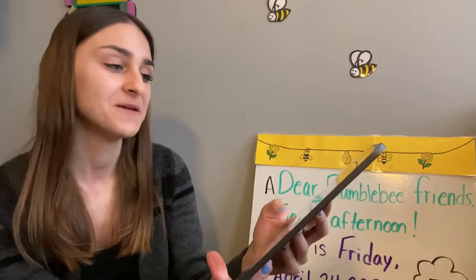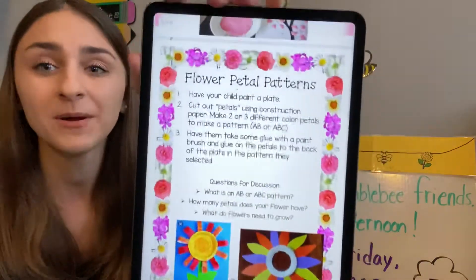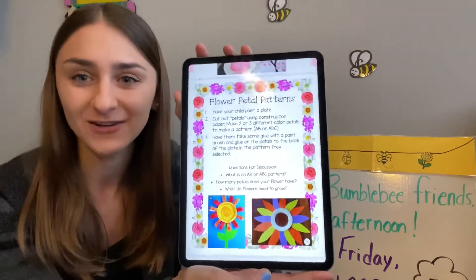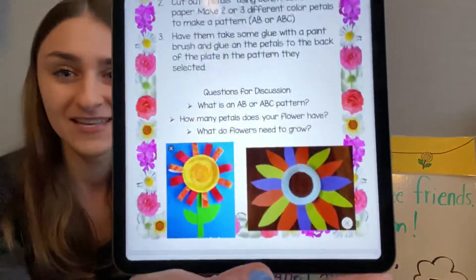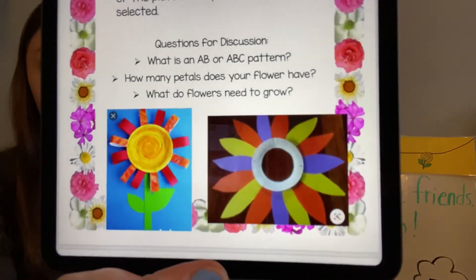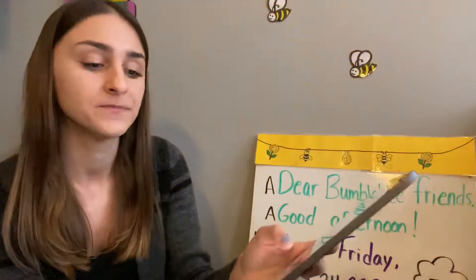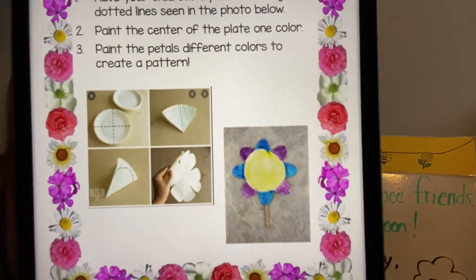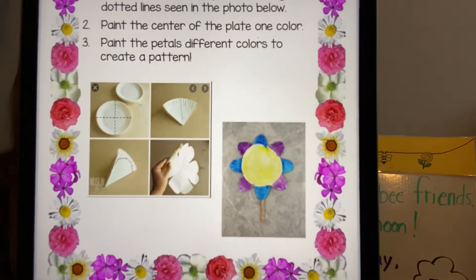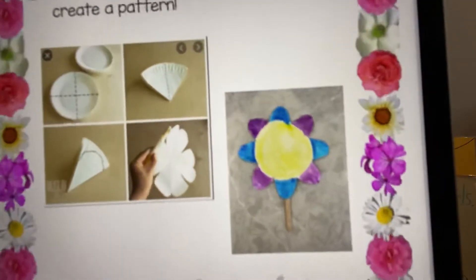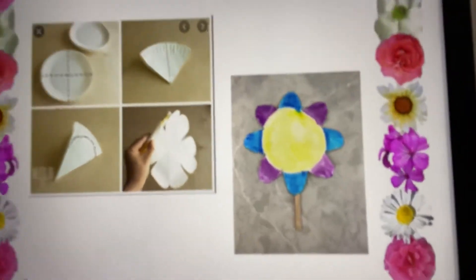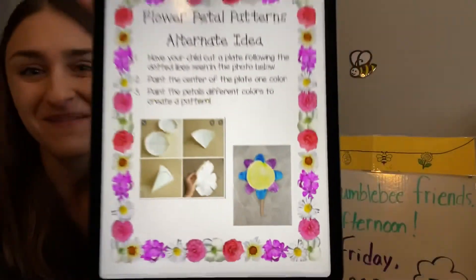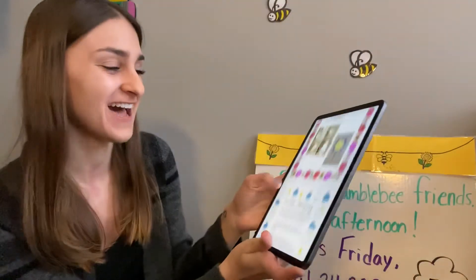Flower petal patterns. We are going to create patterns with our petals. Here are a few examples of ways you could do it. I used a paper plate — I folded it, cut it, opened it, and then used paint to create a pattern. What kind of pattern did I make? An A B pattern. Nice job!